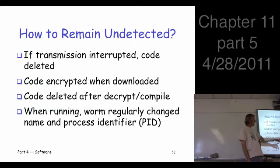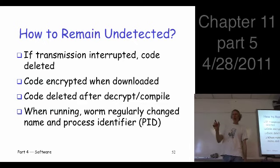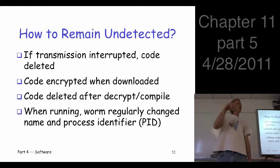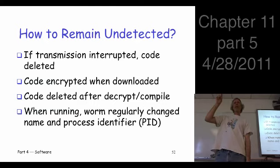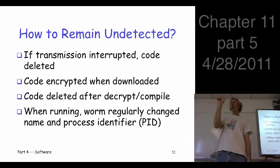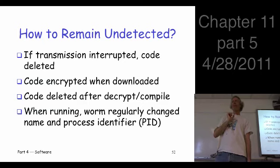When actually executing, the worm would change its process ID. So if you did a 'top' on a Unix system showing the top processes, it would have a different name all the time — you wouldn't see 'Morris worm' sitting there at the top.